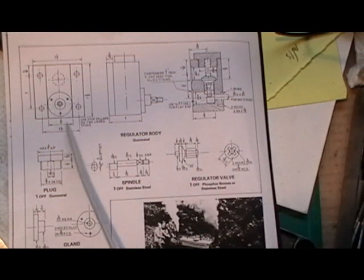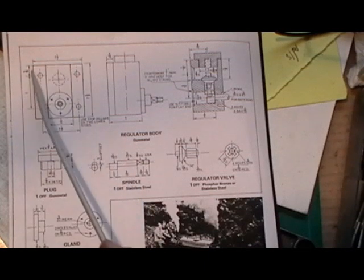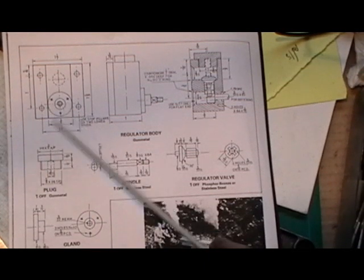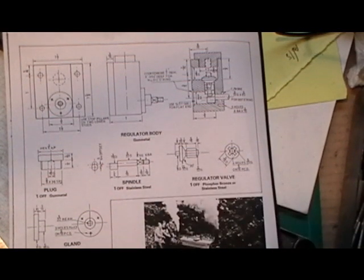Now the body is in phosphor bronze and I was going to buy a little piece of phosphor bronze to do that, but I've managed to come across a gun metal casting off somebody for the same price as it would have cost me for phosphor bronze.